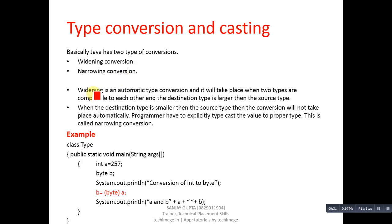First, I am going to explain widening conversion. Widening is an automatic type conversion and it will take place when two types are compatible to each other and the destination type is larger than the source type. You can also say that it is implicit type conversion. In this conversion, if we have two variables and an equals sign between them...